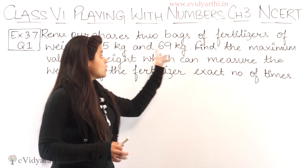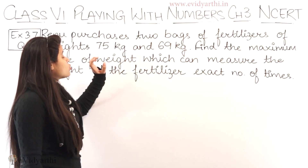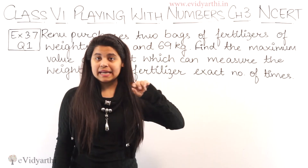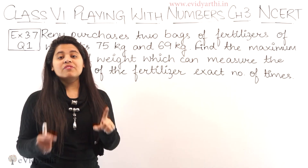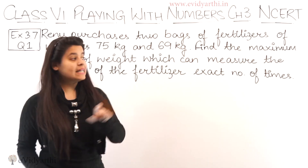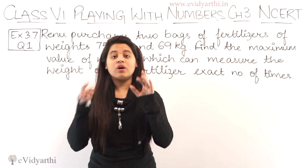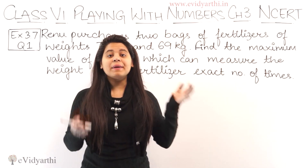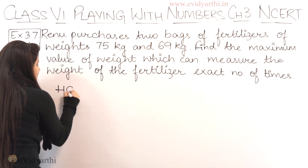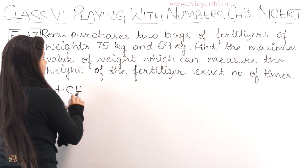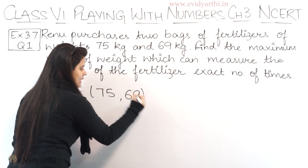We need one weight which can measure both bags an exact number of times. Because the question asks for the maximum value, this means we have to find the highest common factor between these weights — kyunki jo inka highest common factor hoga, woh hi hoga jo exact number of time measure kar sakega. So we will start with HCF, which is the highest common factor of 75 and 69.